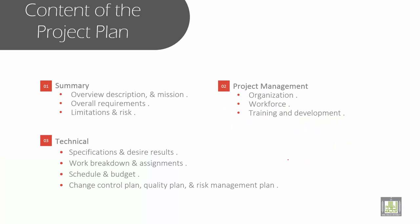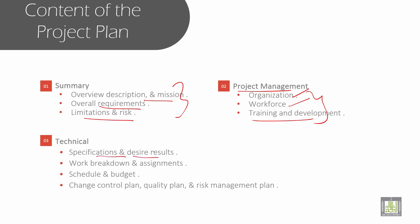In this chapter, we have contents like: first, overall description and mission; then overall requirements, limitation, and tasks. I'll give you a detailed analysis of mission, vision, limitations, and risks. Then I'll cover project management — how it covers organization, the role of workforce, training and development. Finally, we have technical slides covering specifications, latest technologies, work breakdown and assignment analysis, schedule and budget, control plan, quality plan, and risk management — all in a detailed manner.